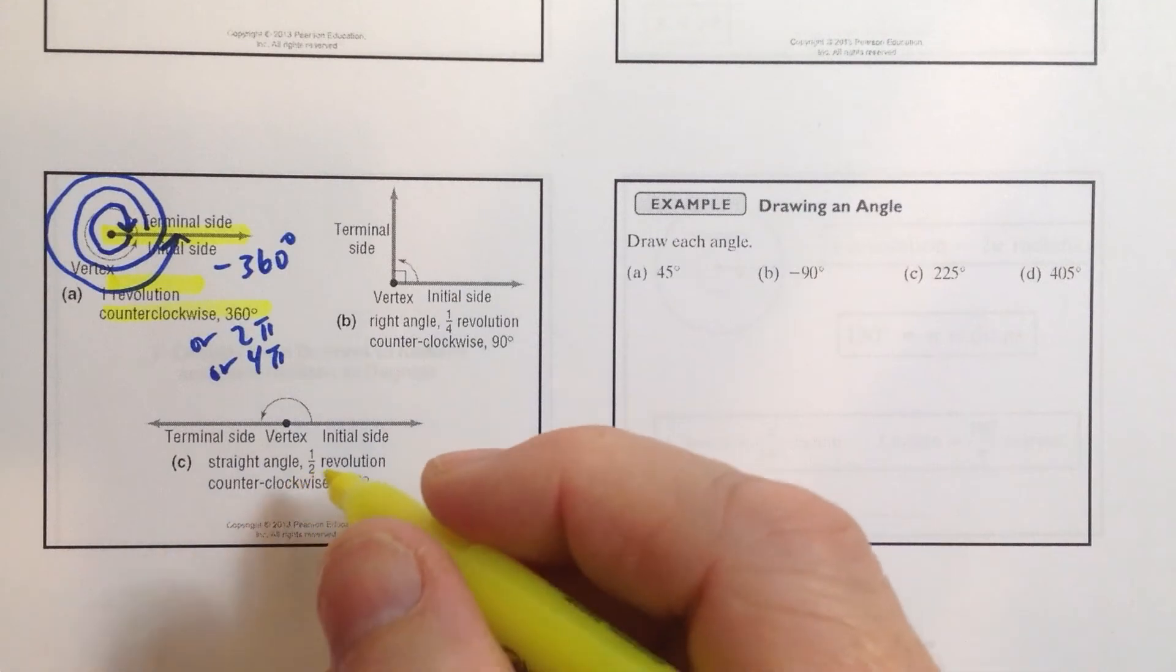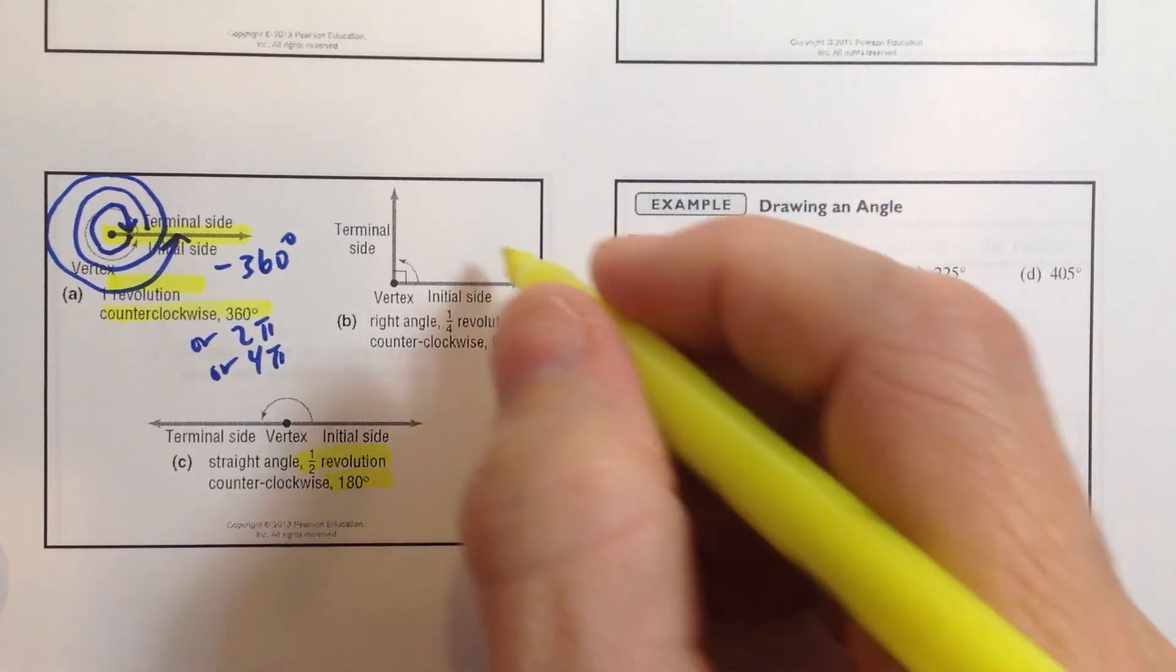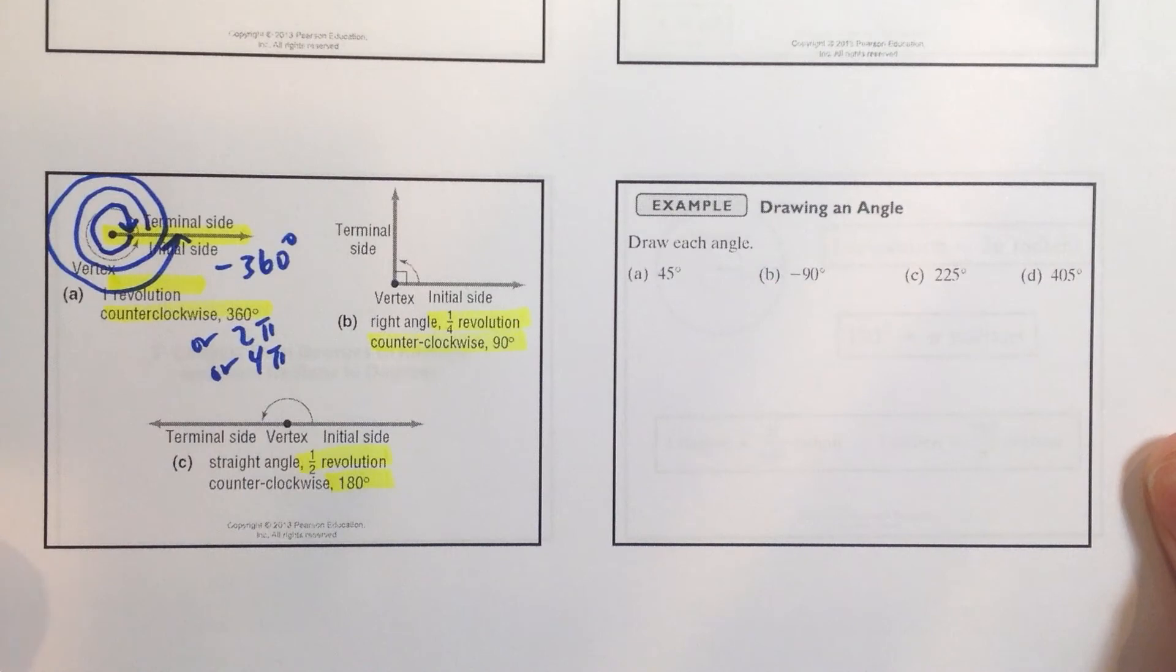And then, halfway around, we know that that's 180 degrees. Halfway around, a fourth of the way around, that's 90 degrees, and so forth.